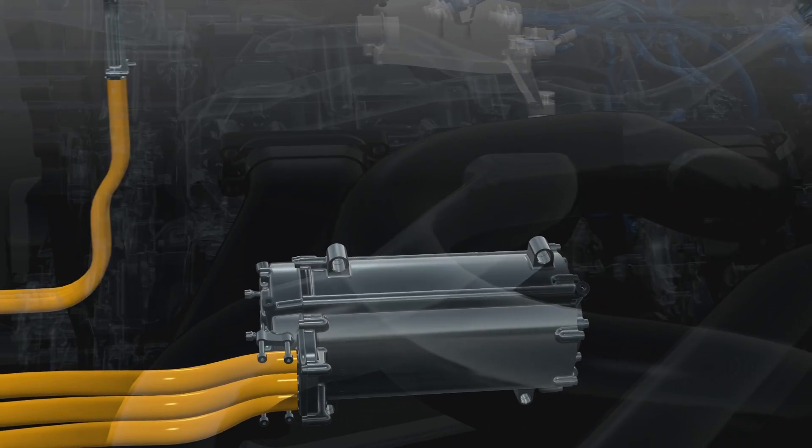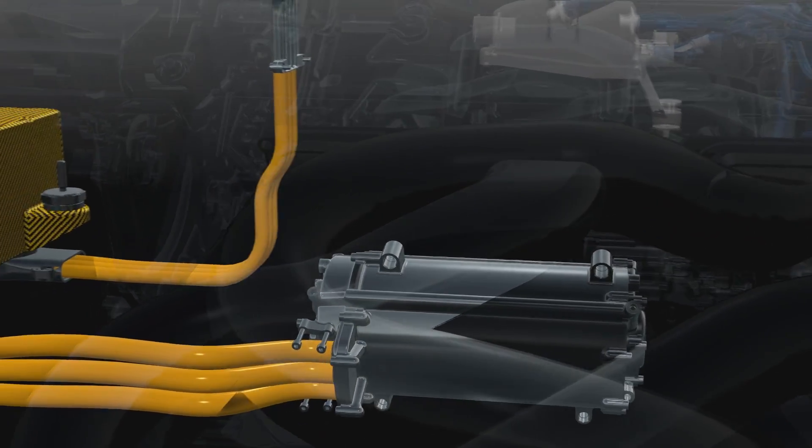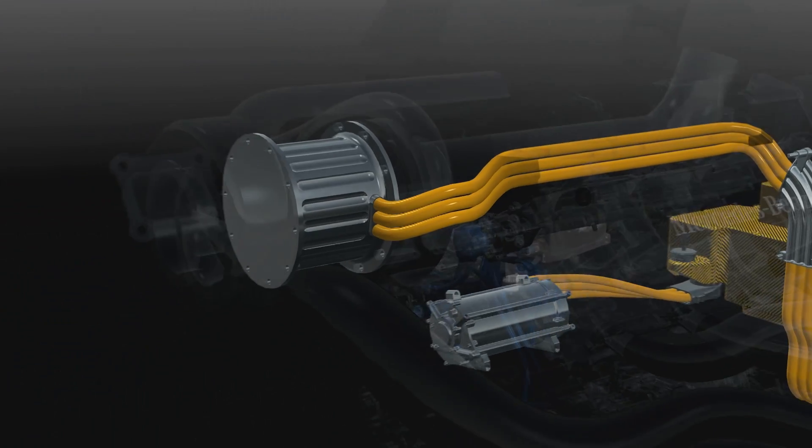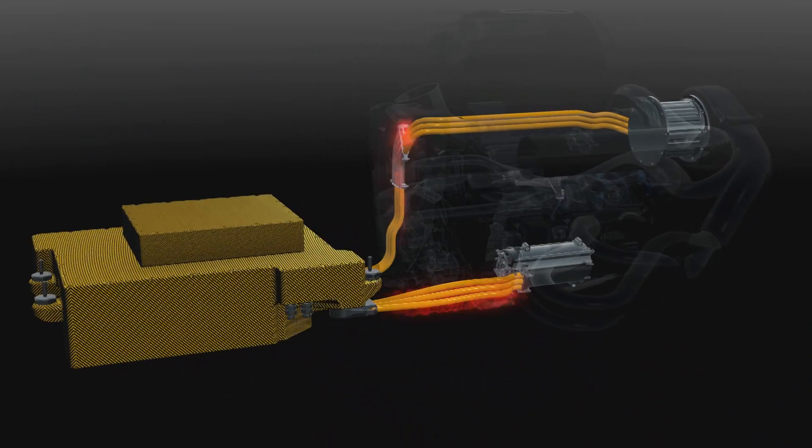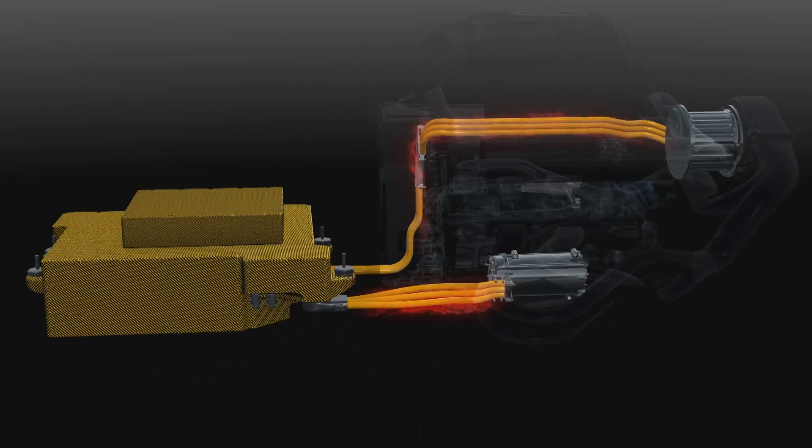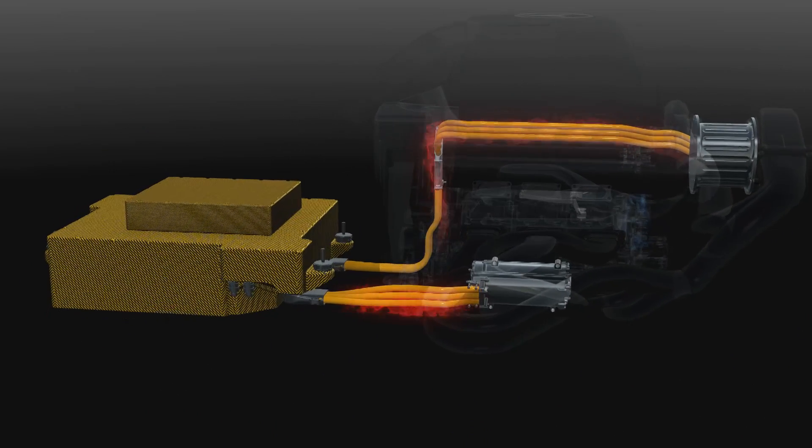The MGU-K harvests braking energy like the previous KERS system and the MGU-H harvests the turbo energy. Both send power to the energy store when working as generators and when deployed act as motors fed by the battery or each other's energy.